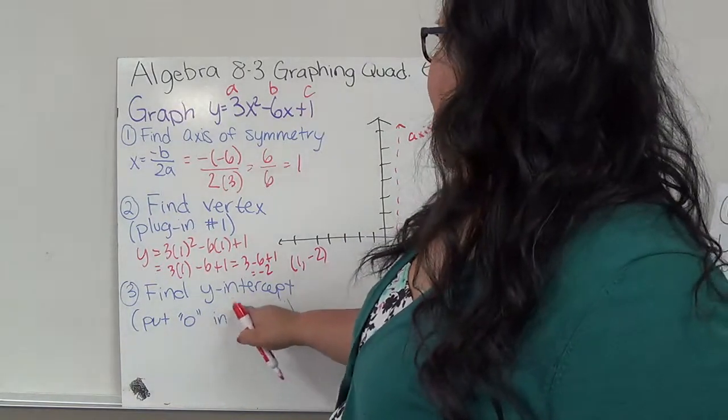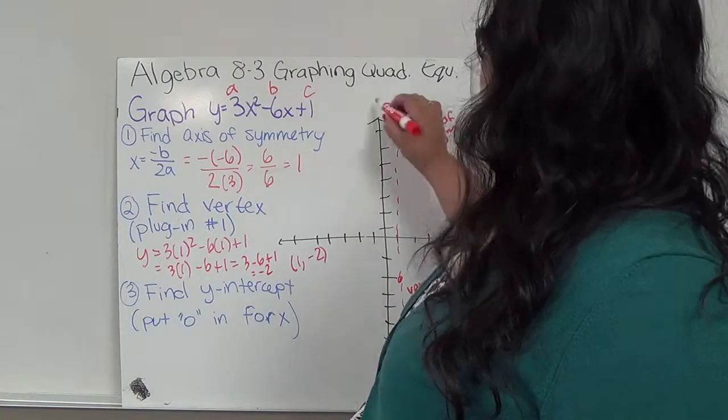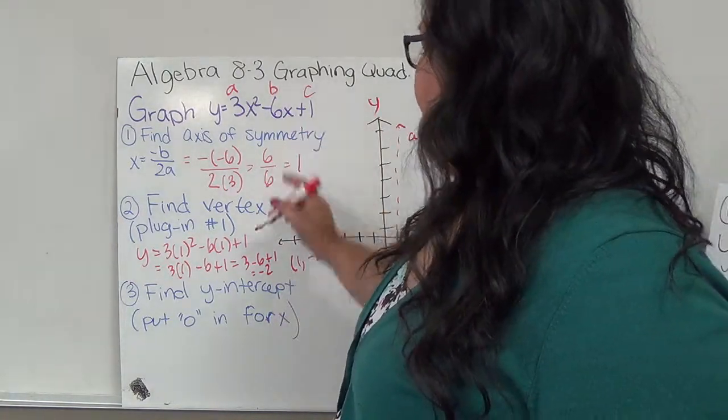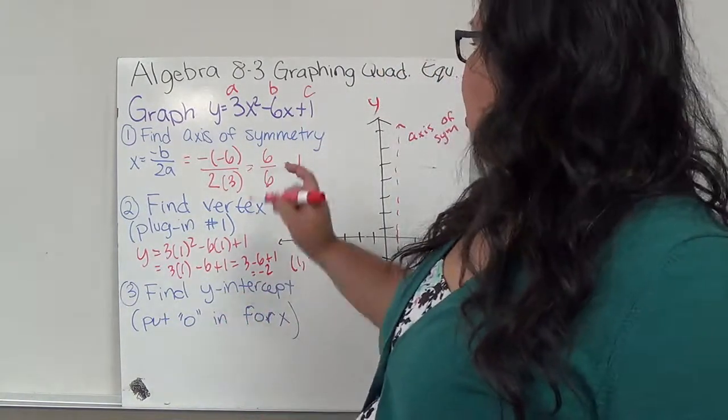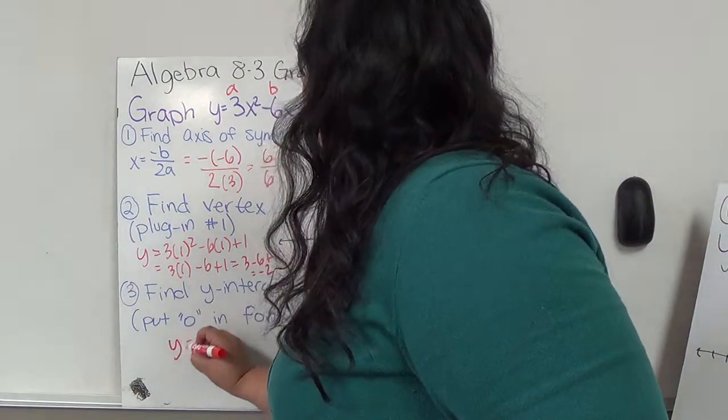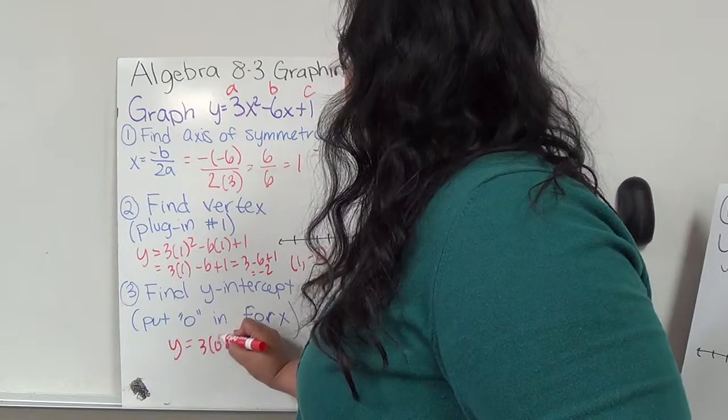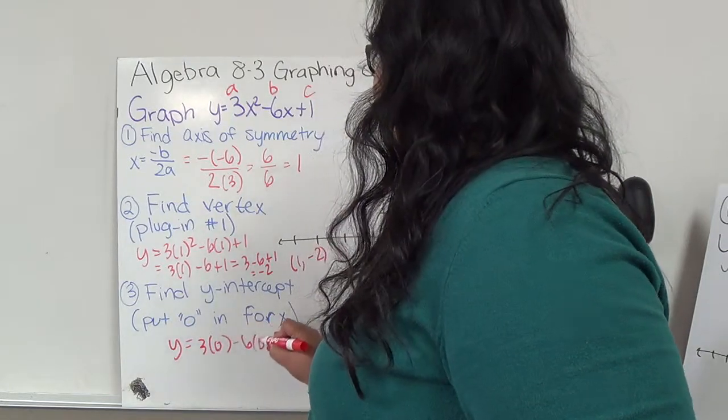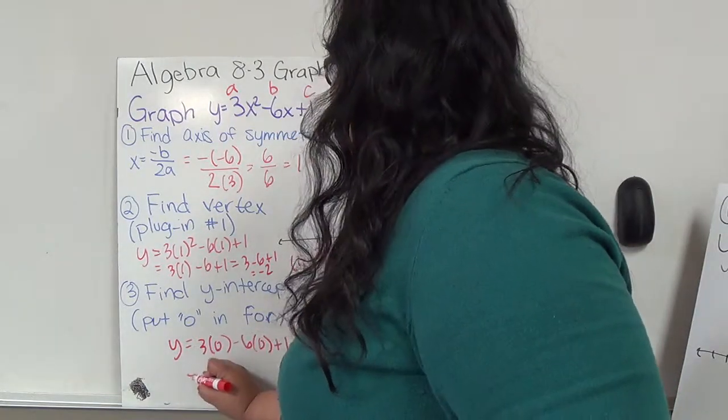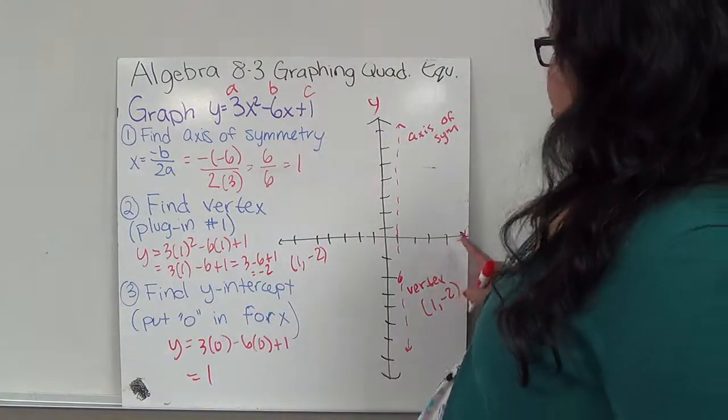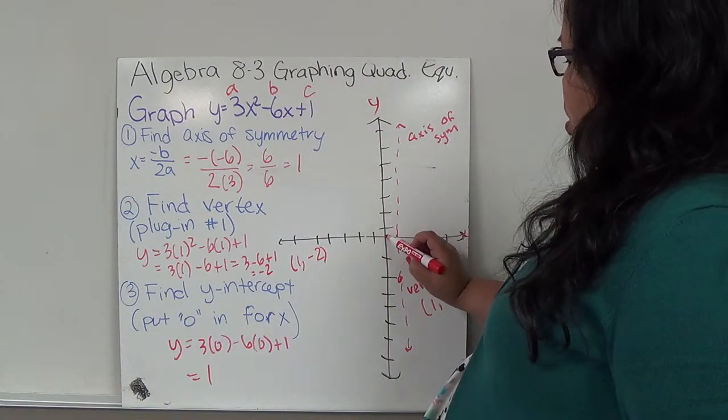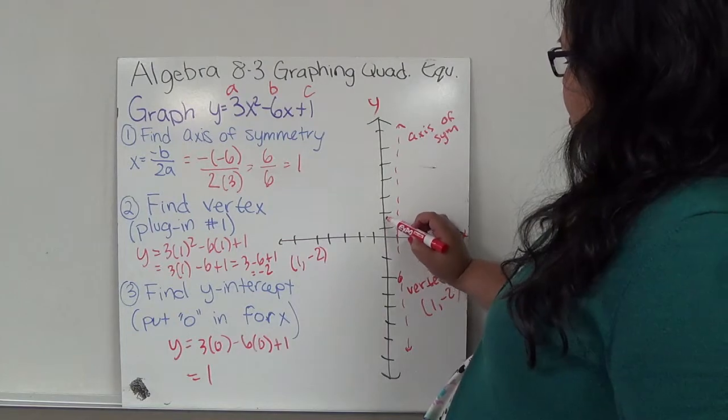So I'm going to find my Y intercept. So here's my X, and this is my Y. So I'm going to plug in 0 for X. So Y equals 3 times 0 minus 6 times 0 plus 1. This is 0, 0, so I'm left with just 1. So that means when X is 0, Y is positive 1.